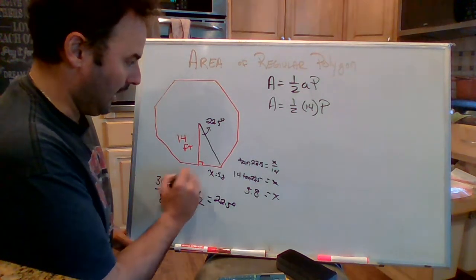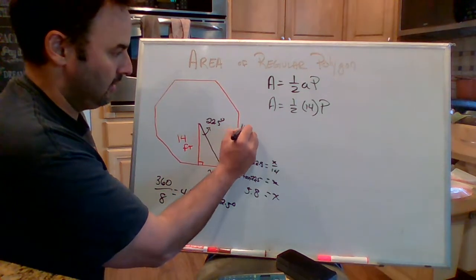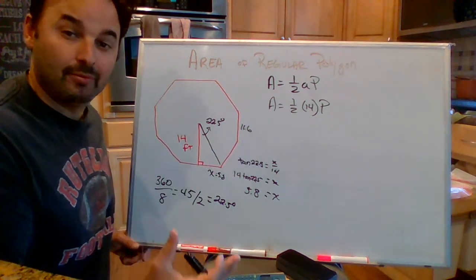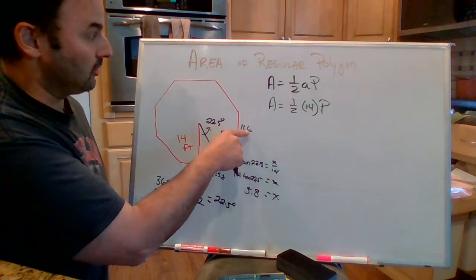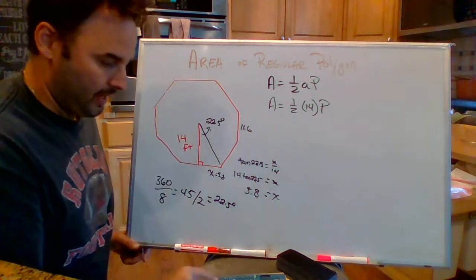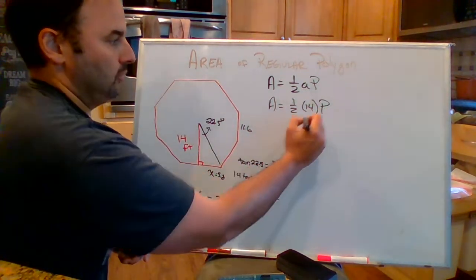The whole side, they're all the same, is 11.6. Each side is 11.6. So the perimeter is 11.6 times 8. 92.8.